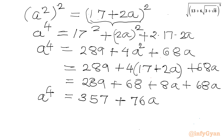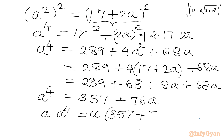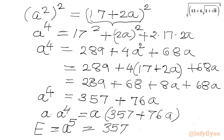We need a^5, so multiply both sides by a: a^5 = a times (357 + 76a) = 357a + 76a². Now substituting a² = 17 + 2a: e = a^5 = 357a + 76(17 + 2a).